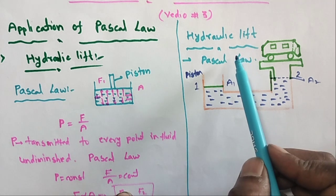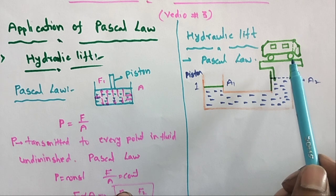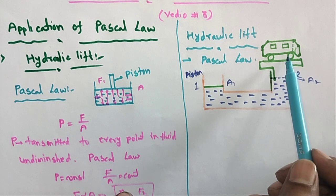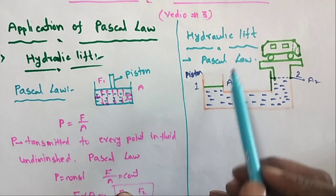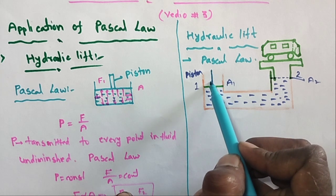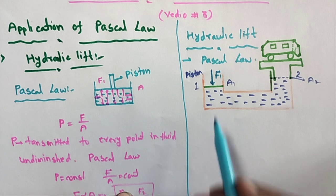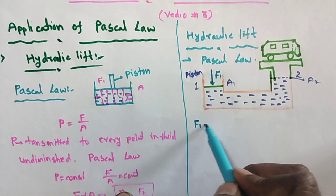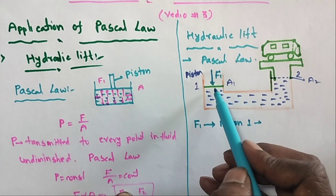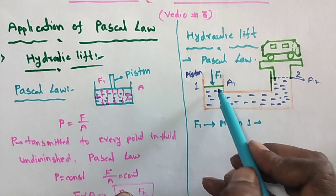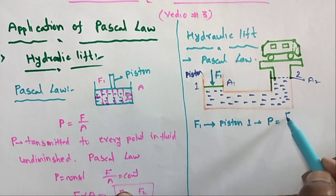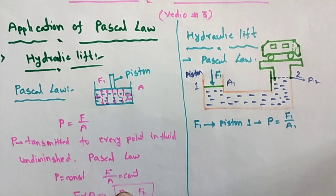The hydraulic lift is mainly used for lifting heavy objects — for example, cars, buses, motor vehicles. When force F1 acts on the first piston, since P = F1/A1, the pressure is produced. According to Pascal's law, this pressure is transported inside the liquid.